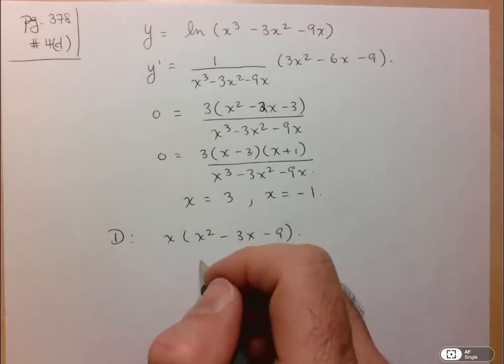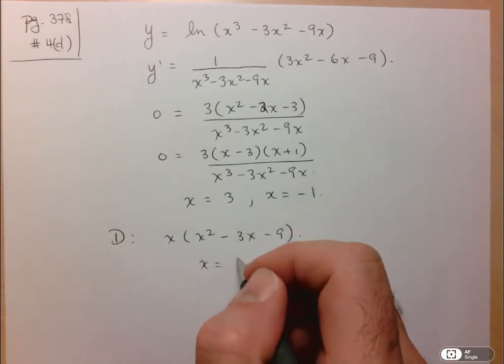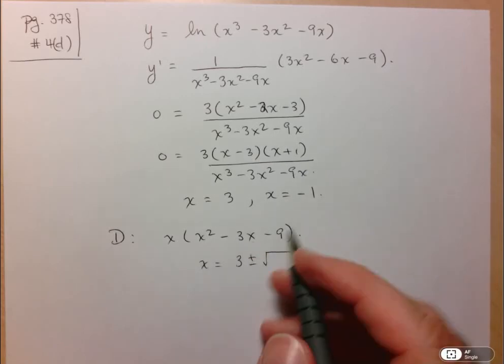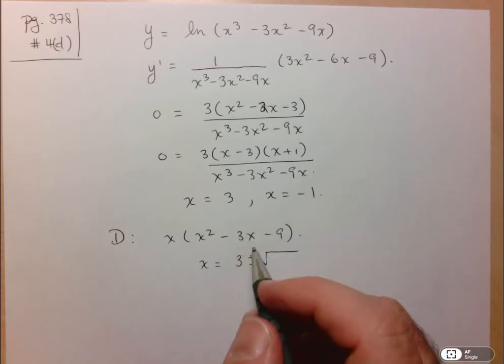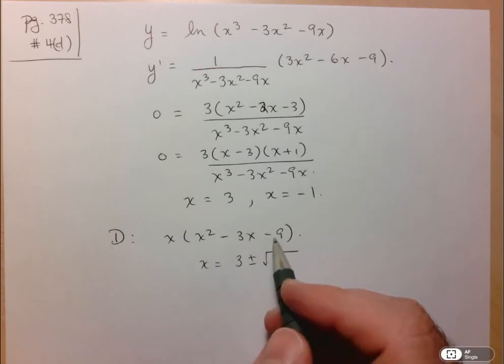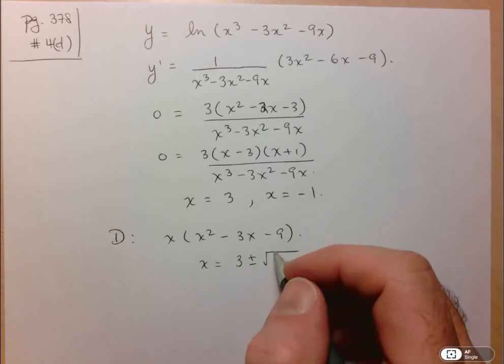So I'm going to have to use a quadratic formula here. So x is equal to negative negative 3, so 3 plus or minus square root of b² so 9 minus 4AC. So 1 and negative 9. So it's going to be b² plus 4 times 9. So 9 plus 36 here.